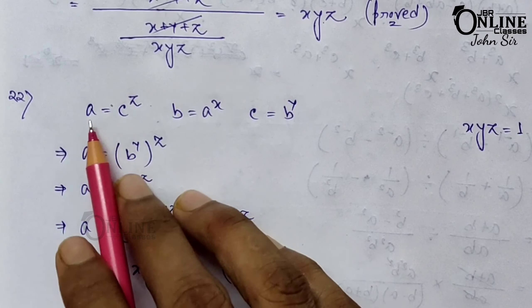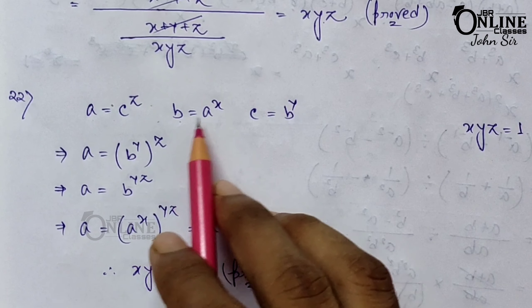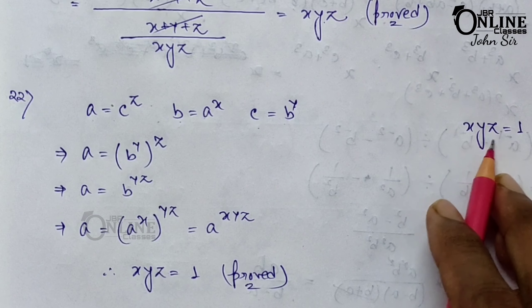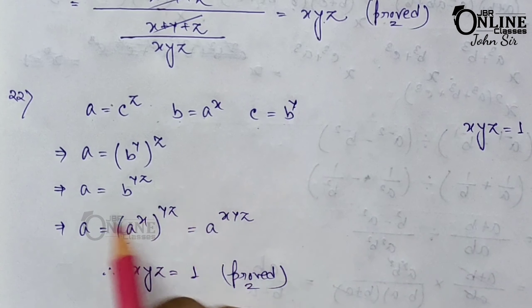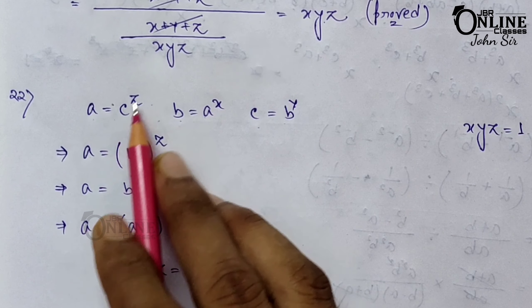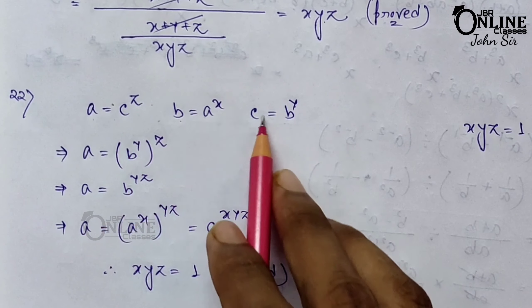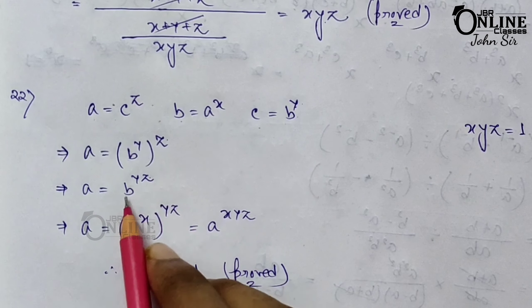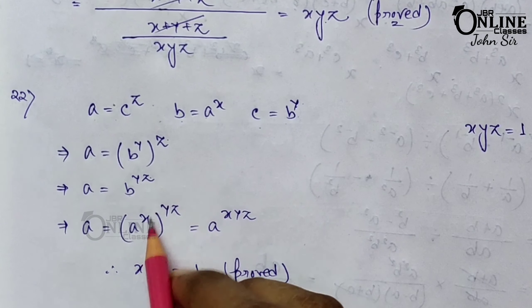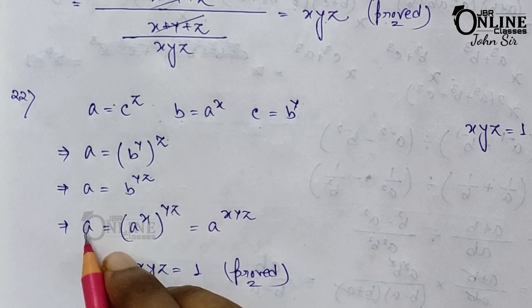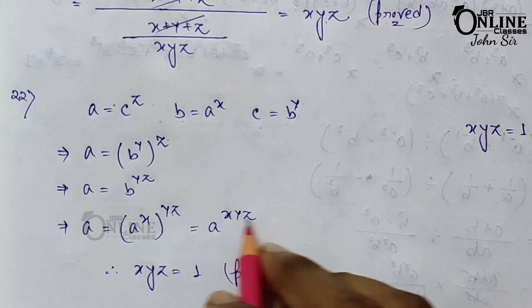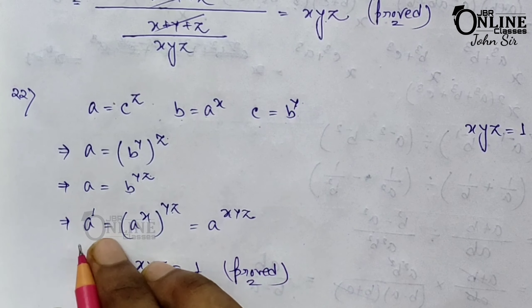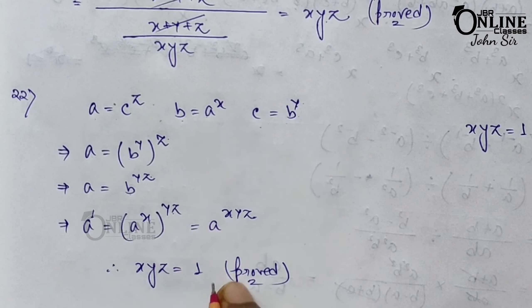Sum 22: If a = c^z, b = a^x, c = b^y, prove xyz = 1. Substitute: a = c^z = (b^y)^z = b^(yz). Then substitute b = a^x: a = (a^x)^(yz) = a^(xyz). Since a = a^1, by comparing exponents xyz = 1. Proved.